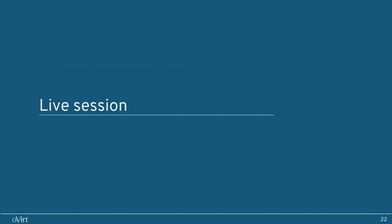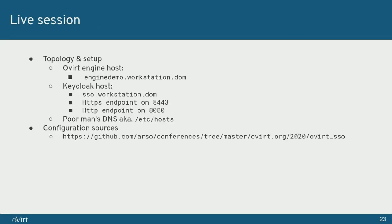Now we are done with the first part. Let's move to the live session, which will be shown using my own machine where I have two different hosts: one for the hosting engine and one for Keycloak. DNS is resolved via /etc/hosts — the simplest possible solution. All the engine configuration is stored in my GitHub project so you can check it yourself later.